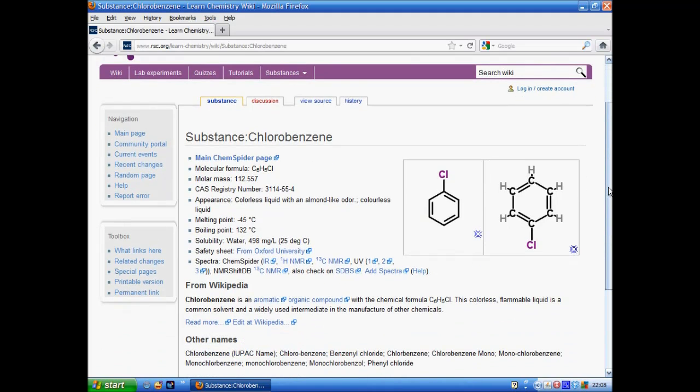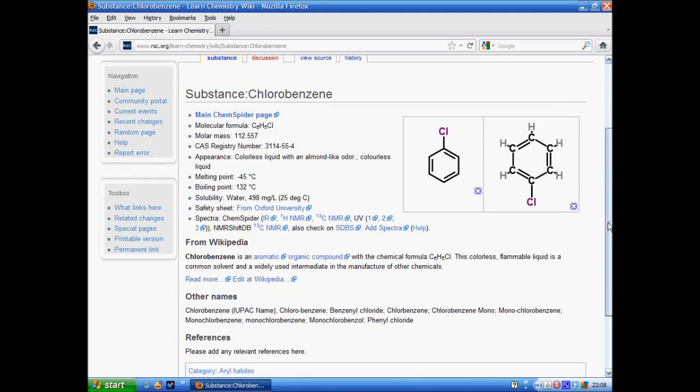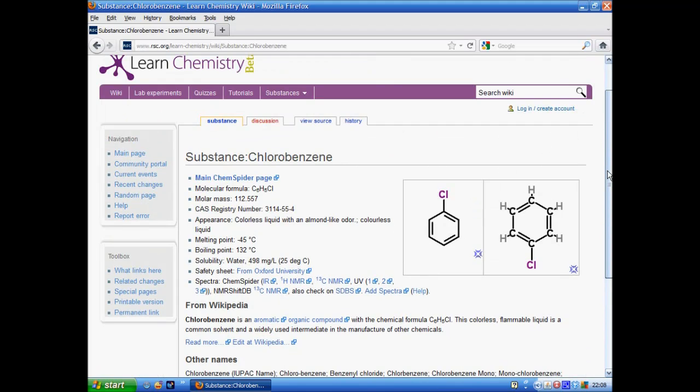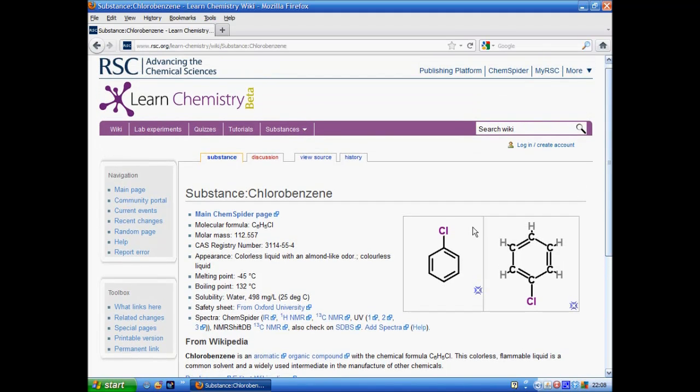There are 2000 substances in the Wiki and that compares to over 25 million compounds in ChemSpider. We've picked those 2000 compounds as ones that are most relevant for students aged 16 to 19 and left out the ones that maybe aren't so relevant for them.